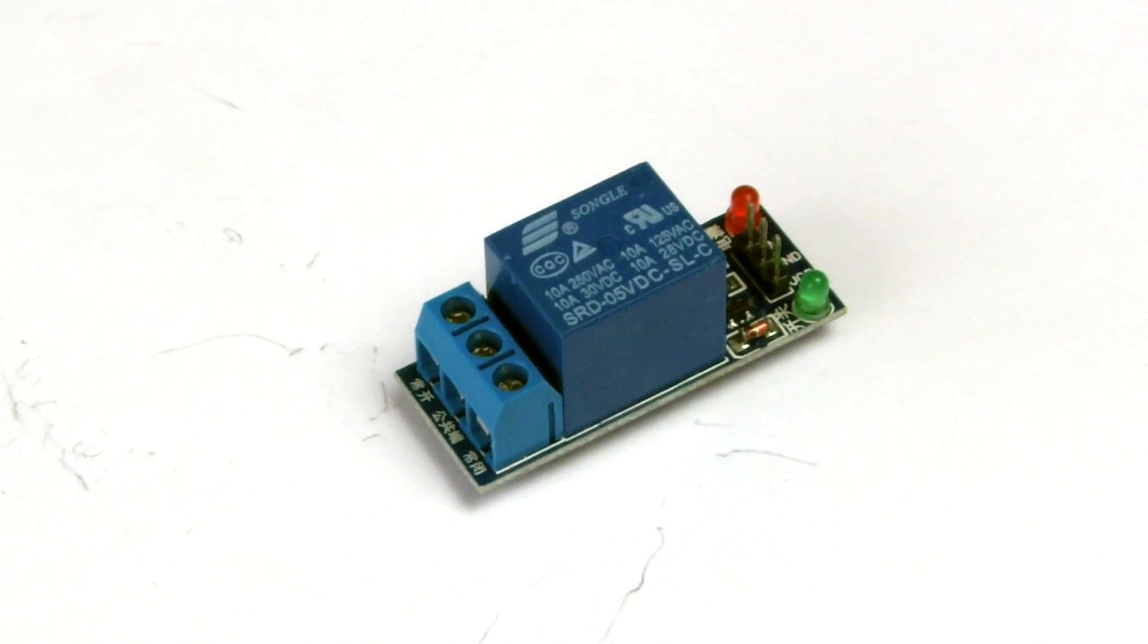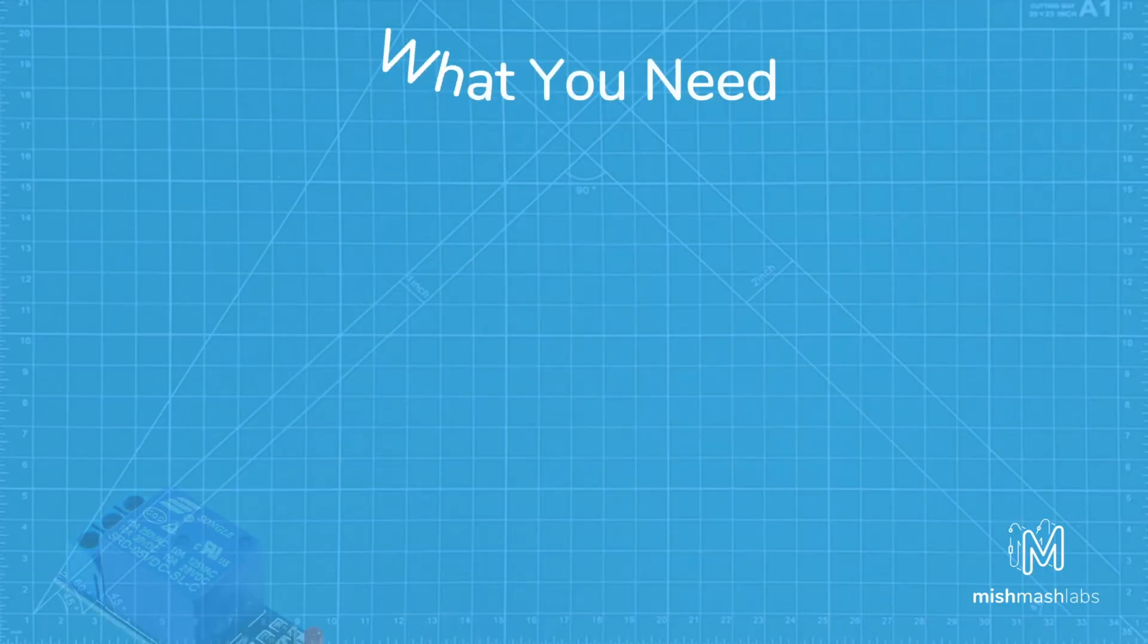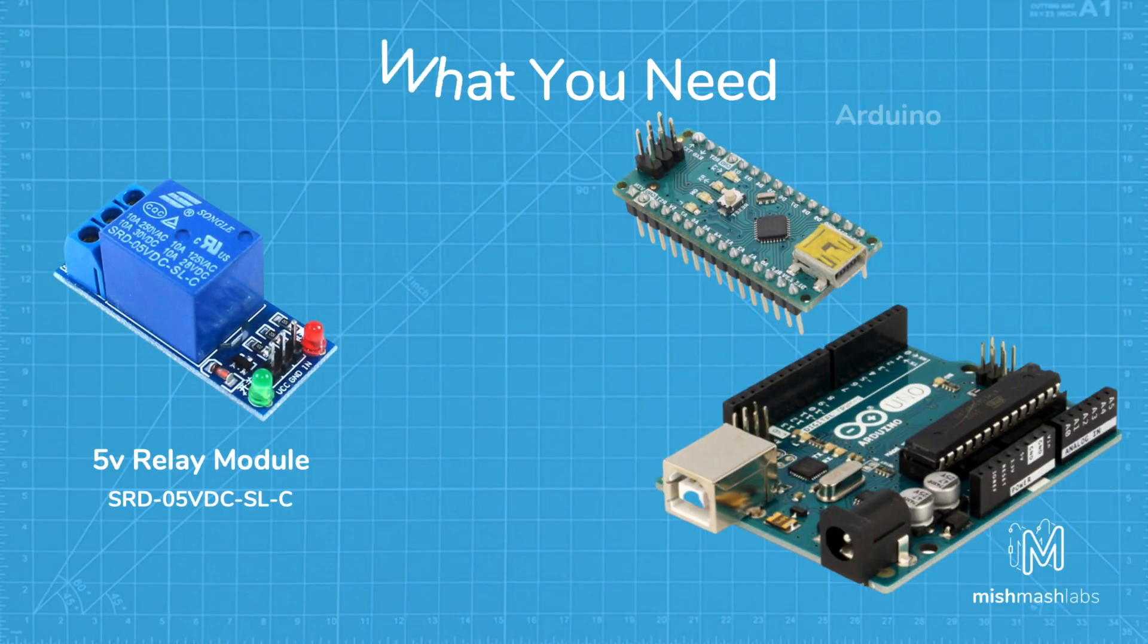A relay consists of an electromagnet that, once energized, causes the switch to open or close. For this tutorial, you're going to need a 5V relay module and an Arduino.